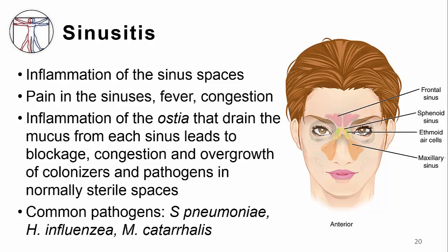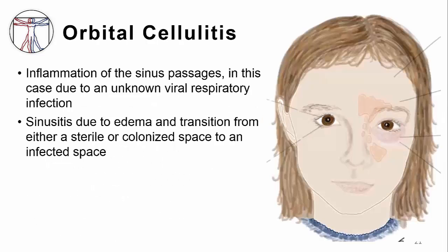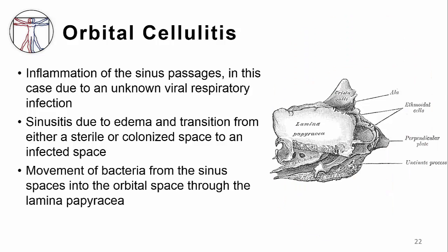Just like otitis media and some of the other diseases we talked about, it's some of the very common bacteria — Streptococcus pneumoniae, Haemophilus, Moraxella catarrhalis. What changed in the case of Irina is this invasion from the sinus space into the orbit. The same sequence of events happened for her: a development of sinus symptoms following an upper respiratory viral infection, development of edema and transition of a sterile or colonized sinus space to an infected space, which allowed these bacteria to overgrow, replicate, invade into the soft tissues around, and through that thin plate of bone called the lamina papyracea, which is all that separates the ethmoidal cells from the orbit itself.